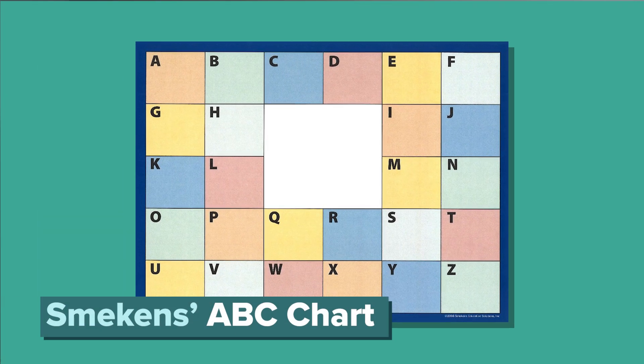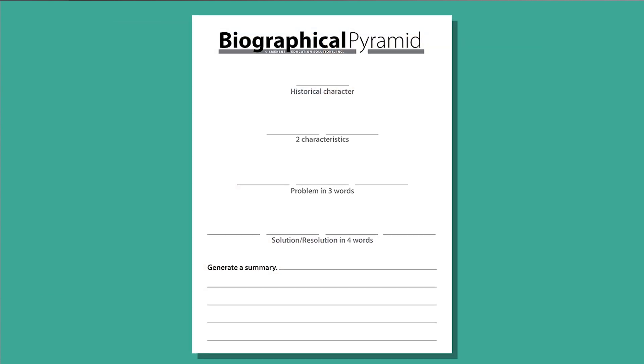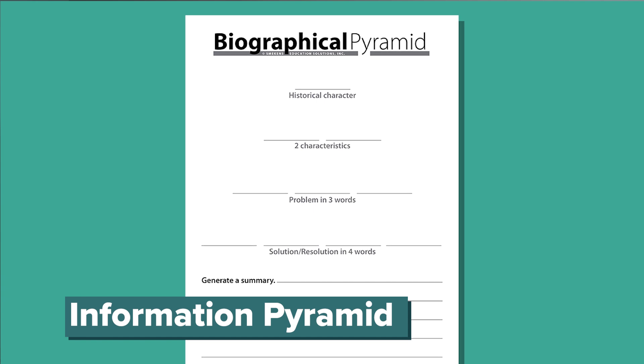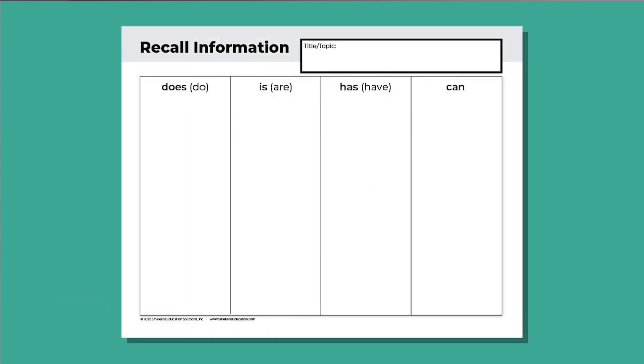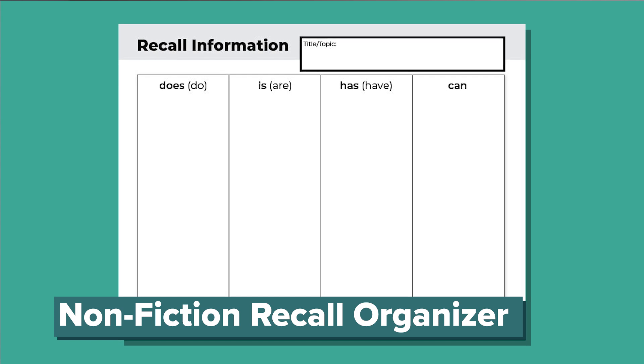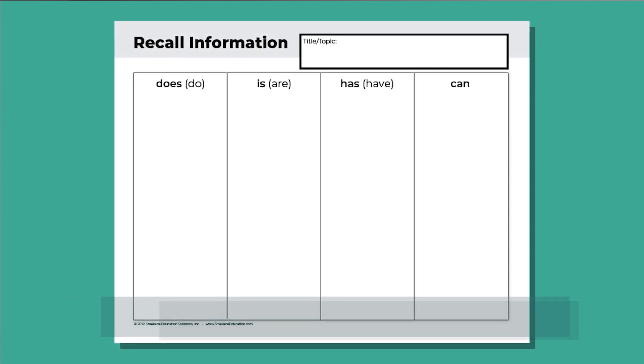This is where some favorite Smekens tools can come into play. What about filling out a Smekens ABC chart with all the interesting facts they're learning? Or a biographical information pyramid on Rosa Parks or Abraham Lincoln, taking the facts and putting them into their own words? Or the Snapple fact lesson to pull out the most interesting details to include in their writing? And the nonfiction recall organizer — the can, has, is, does organizer — to pull out different facts about the topic. I love the customization of the Spaces tool on School AI, and I love how user-friendly it is for students. When we pair it with instruction to organize this information, it becomes an even more powerful resource.